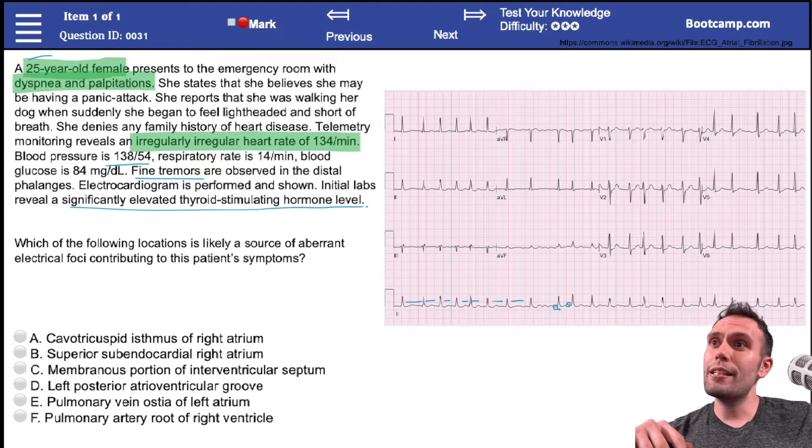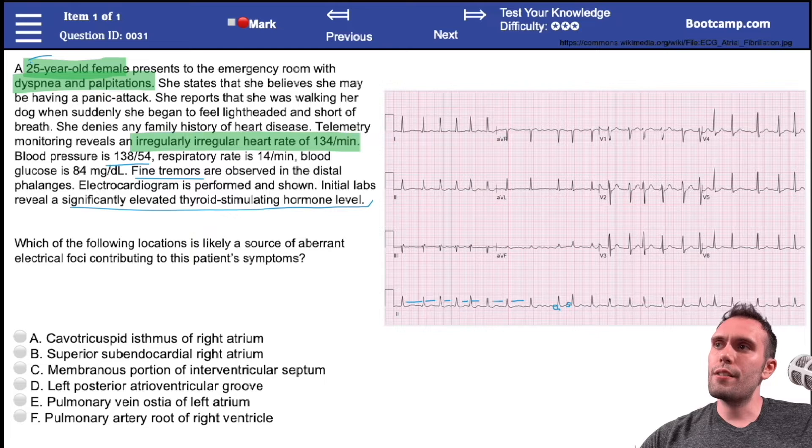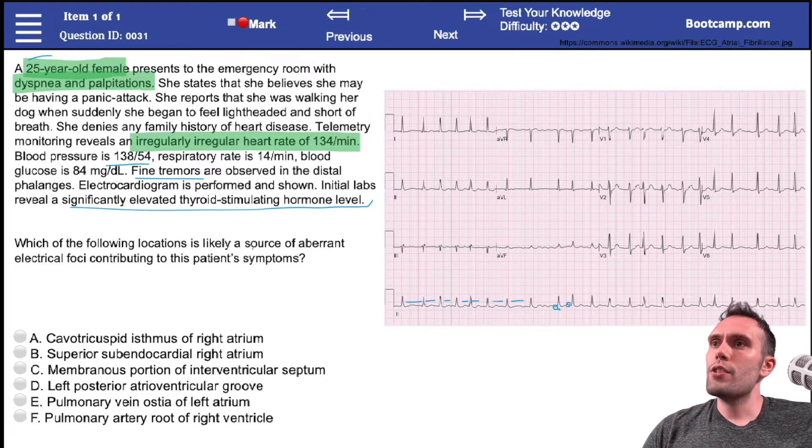Initial labs reveal significantly elevated TSH. This is very classic - 25 years old, 20 to 30 is a big age range in women for Graves disease.